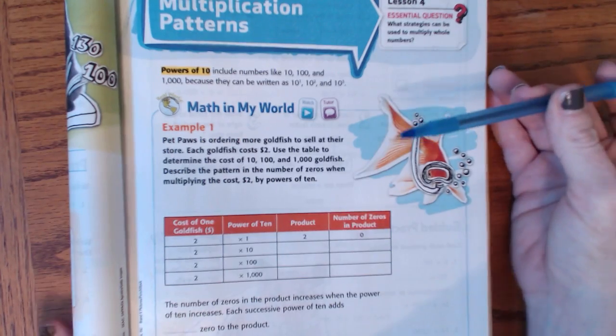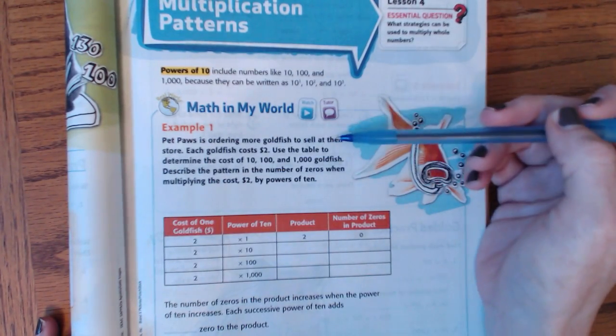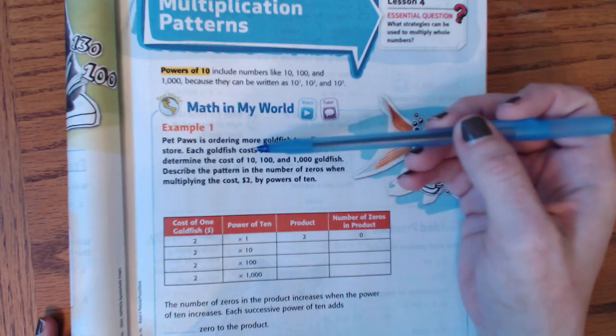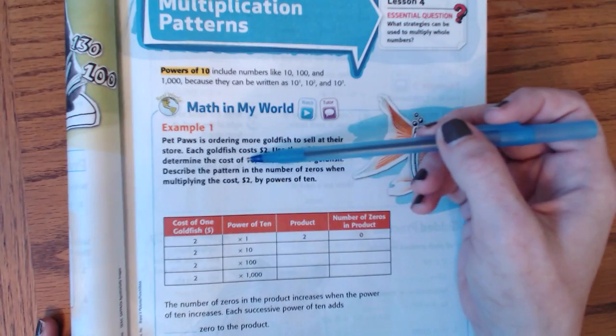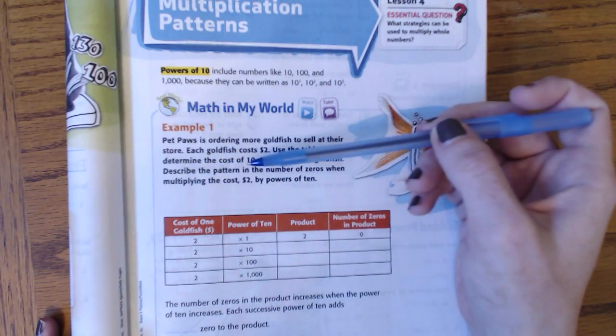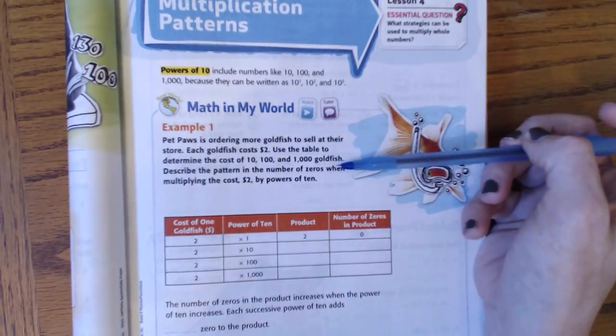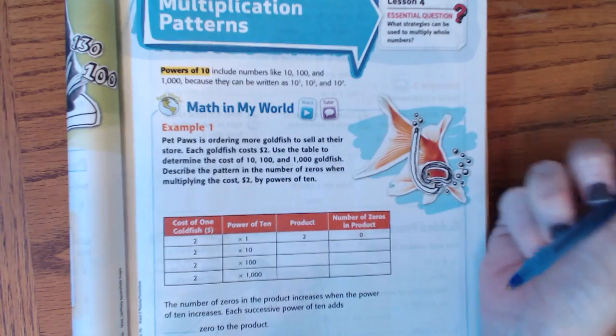Let's look at the example. Number one, Pet Paws is ordering more goldfish to sell at their store. Each goldfish costs $2. Use the table to determine the cost of 10, 100, and 1,000 goldfish. Describe the pattern in the number of zeros when multiplying the cost by 2 by the powers of 10.